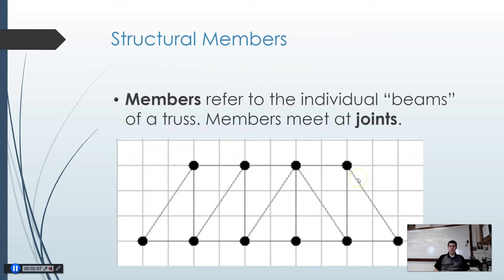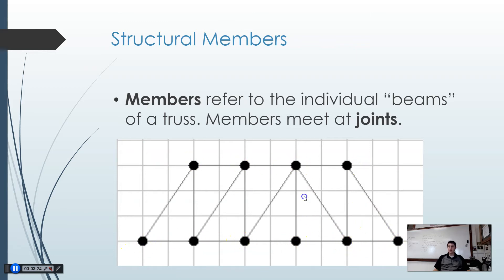When we say members, we mean each of the individual beams that make up a truss. The dots where members meet are called joints. In this image we have 17 members and 10 joints. The line parts are the members and the dots are the joints.